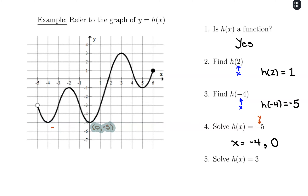To solve h of x equals positive 3, draw a horizontal line at y equals positive 3. There is one intersection at the coordinate (3, 3), so x equals positive 3 is the only solution. That's how we work with functions using tables and graphs.